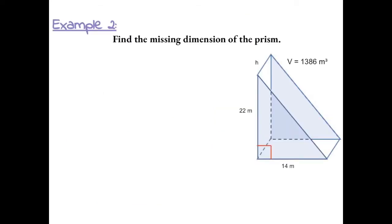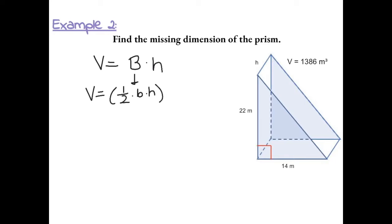Example 2: Find the missing dimension of the prism. Let's start with the formula for volume: V equals B times H, where B is the area of a triangle. So the full formula is one-half times the base times the height of the triangle, times H, which is the height of the prism.